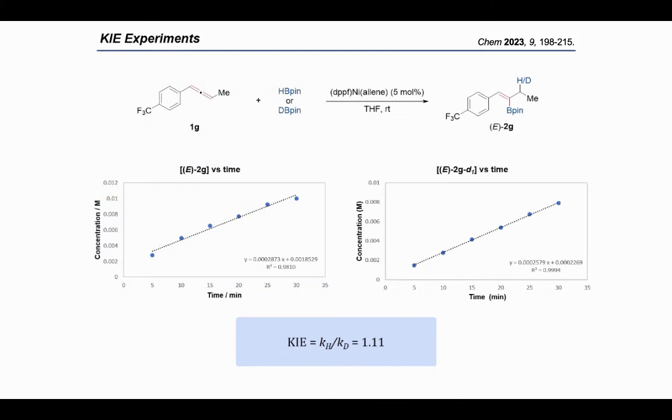Next, we did a series of KIE experiments. In this reaction, we used DPPF-liganded nickel-olefin complex as catalyst to take the place of nickel precursor and DPPF ligand to eliminate the influence of the reaction initiation. By measuring the initial reaction rate of the internal allenes and HB-pin or DB-pin, the KIE value goes to 1.11, which indicates that the sigma-metathesis of HB-pin with nickel-olefin complex should not be the rate-determining step.